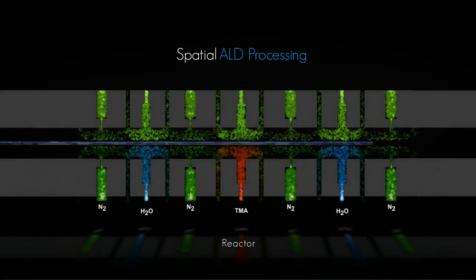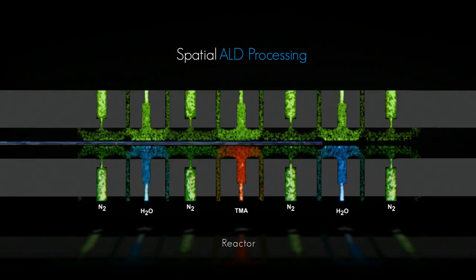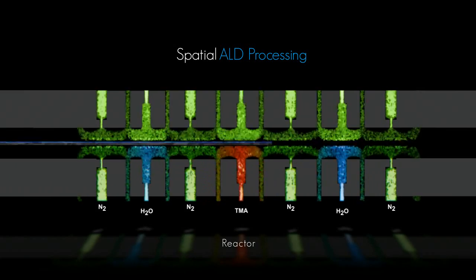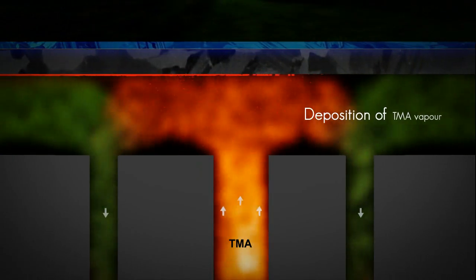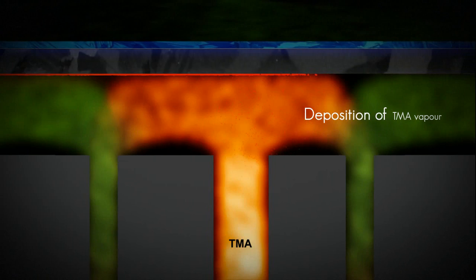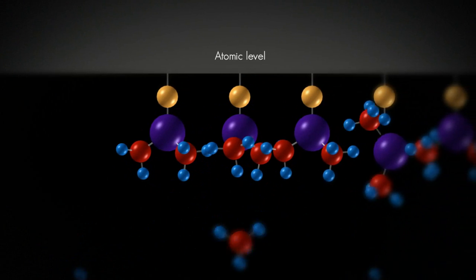The two process gases are separated by nitrogen gas curtains to prevent any contamination. The arrangement of the reactor compartments is such that the ALD process works in both directions. When the substrate arrives at the TMA processing compartment, trimethylaluminium forms a monolayer on the substrate, represented here at atomic level.